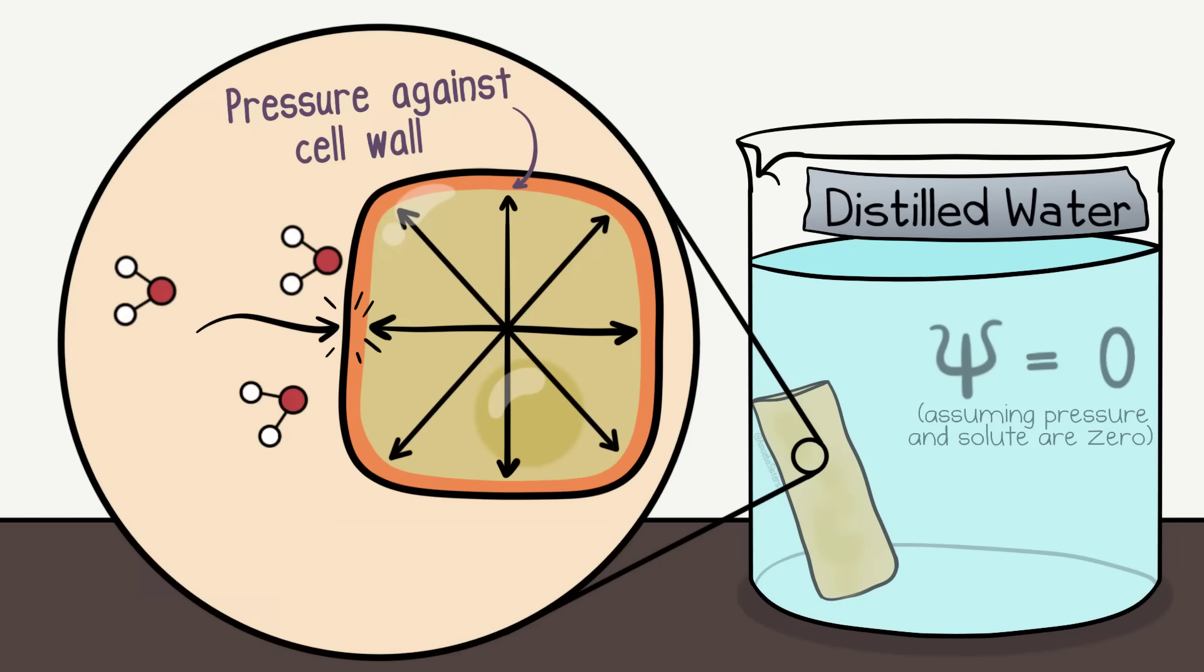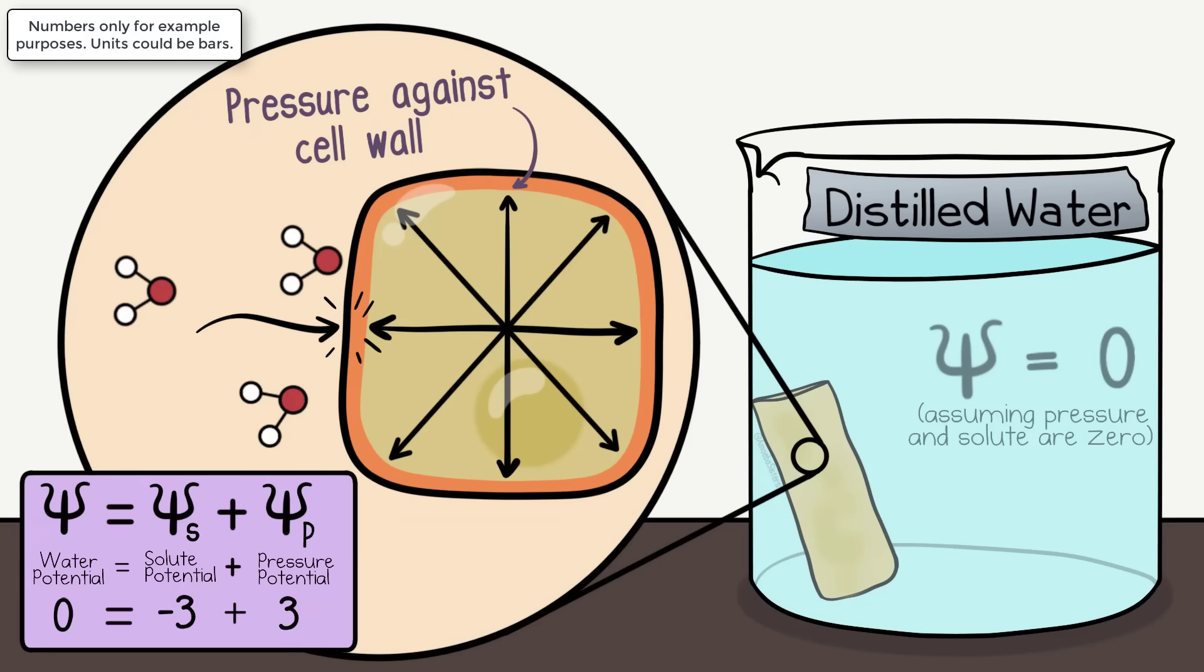But over time, as the potato core cells gain water, the water that is entered exerts pressure against the plant cell walls from inside the plant cells, therefore raising the overall water potential in the potato core cells.